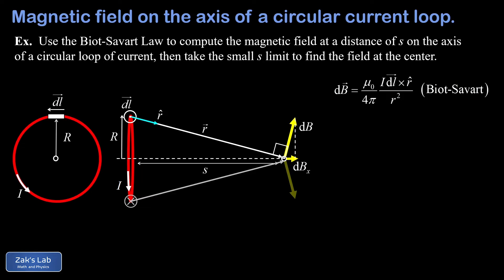All we need to add up are the x-direction contributions to the total magnetic field at the observation point. The x-component dbx can be written as db times cosine of an angle theta. To relate cosine theta to the problem parameters: theta plus 90 degrees plus the remaining angle must equal 180 degrees, making that angle 90 minus theta. Since this is a right triangle, the corner angle adds to 90 degrees with 90 minus theta, so that corner angle is theta itself.